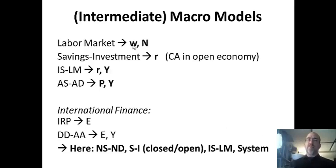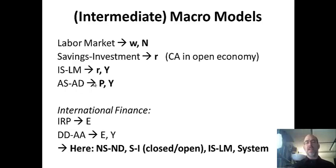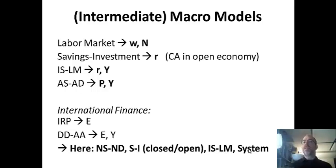In the five lectures that follow, I'll start with the NS and ND model for the labor market, then give the SI model for the closed economy and then the open economy. Fourth, I'll do the IS-LM model as a setup, and then show the full system in the final slides. Separately, for international finance, I do the IRP interest rate parity model for the exchange rate, and bring exchange rate and output together with the DD-AA model. So the setup is four variables in the closed economy, two in the open economy — we'll focus on the four, lay out three main models that derive them, and then talk about them as a system at the end.